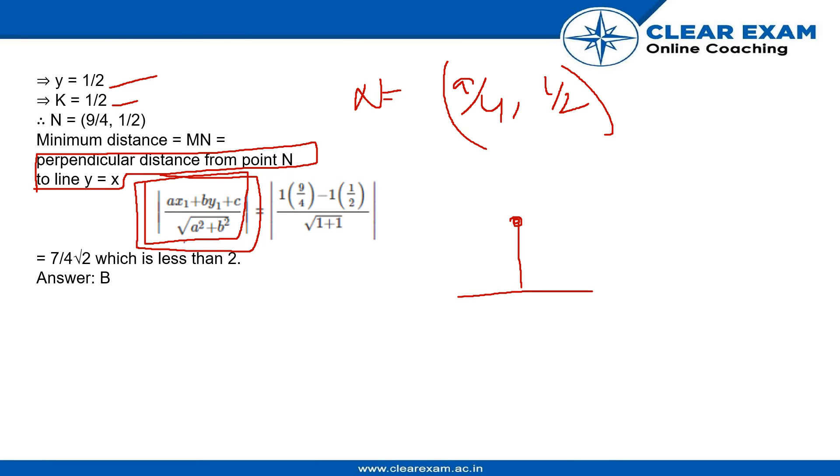This is the formula, that is a x1 plus b y1 plus c upon root of a square plus b square. Now, putting the values of a x1, b y1, we get 1, 9 by 4 minus 1, 1 by 2 upon root 1 plus 1, which is 7 by 4 root 2, which is less than 2.